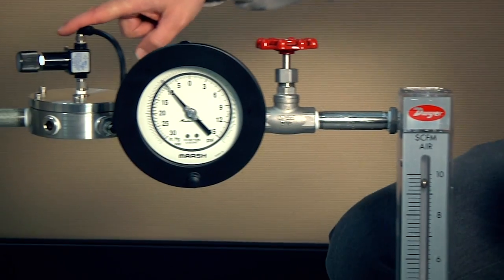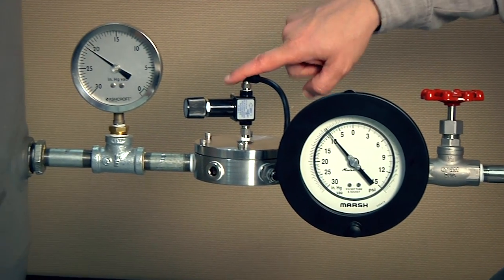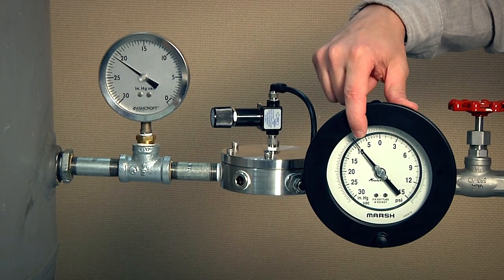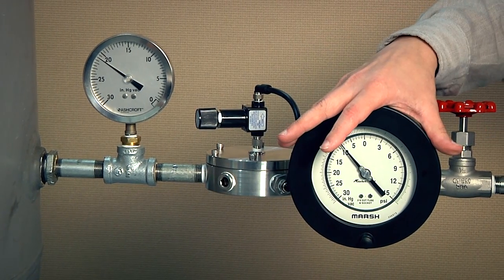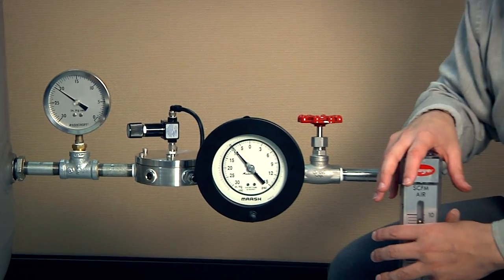Yet if we come back over to the Equilibar vacuum regulator, we'll see that we're still at our 10 inch of mercury vacuum set point. So the vacuum pressure is independent of system flow.